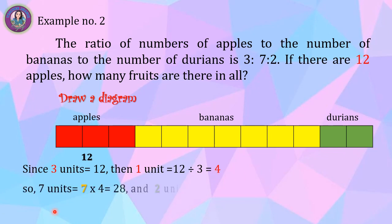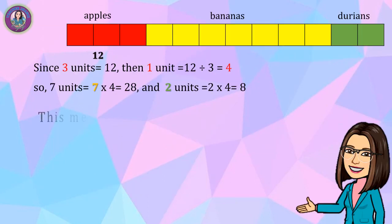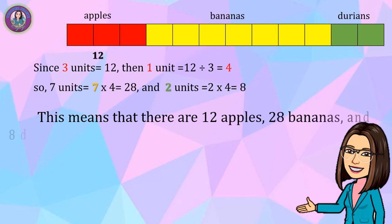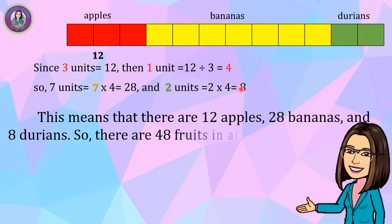So 7 units equals 7 × 4 = 28, representing the number of bananas. And 2 units equals 2 × 4 = 8, representing the number of durians. This means there are 12 apples, 28 bananas, and 8 durians, so there are 48 fruits in all — found by adding the number of apples, bananas, and durians.